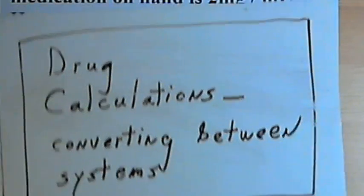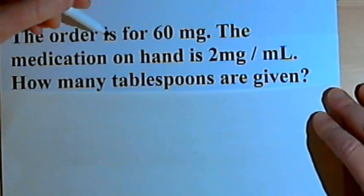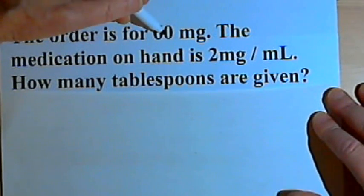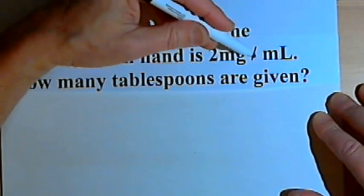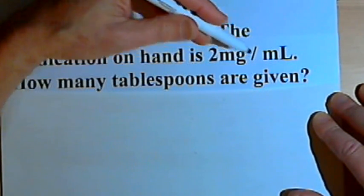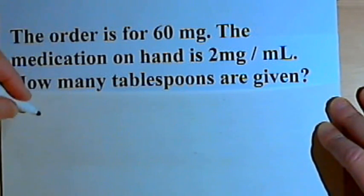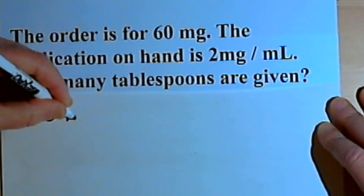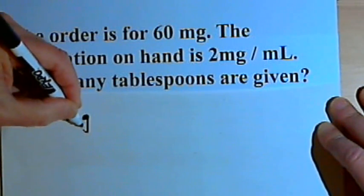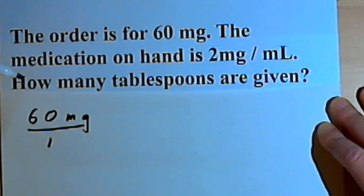Here's the first problem. The order is for 60 milligrams. The medication on hand is 2 milligrams per milliliter. We want to find out how many tablespoons are to be given. I'll start out by writing the order — that was 60 milligrams — and since I'm going to be dealing with fractions, I'll turn that into a fraction also and put it over 1.